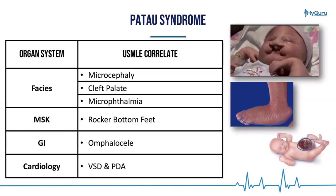A key study tip for these syndromes is to hone in on the sentinel feature — the defining feature of that genetic syndrome. For Patau syndrome, the defining feature in all vignettes is midline defects. Cleft palate is a midline defect, omphalocele is a midline defect, and VSD is a midline defect. Try to categorize and learn these syndromes by first identifying that high-yield defining feature.